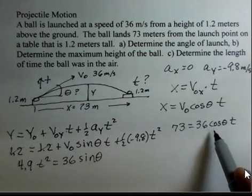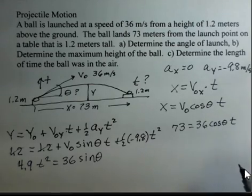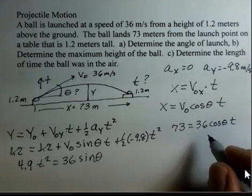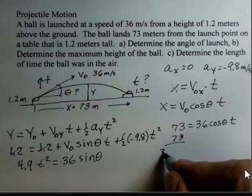In this x equation I'm going to solve for time. I'm going to solve for time and then substitute that in. So divide by 36 cosine theta. I won't simplify the numbers just yet.